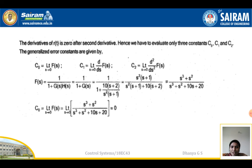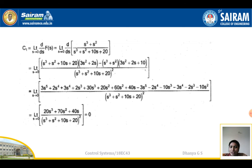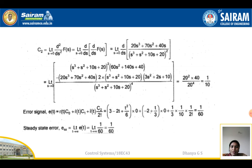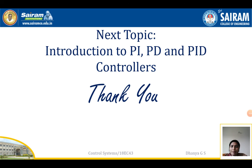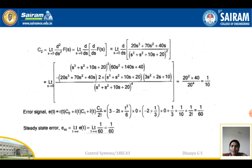For c₁ = limit s→0 of d/ds f(s). Differentiating f(s) gives (20s³+70s²+40s) / (s³+s²+10s+20)². Applying s→0 gives c₁ = 0. For c₂ = limit s→0 of d²/ds² f(s), differentiating d/ds f(s) again and applying s→0 gives c₂ = 1/10.